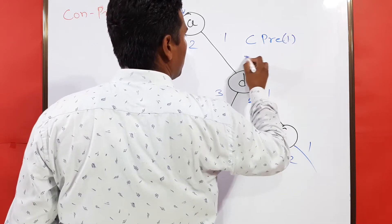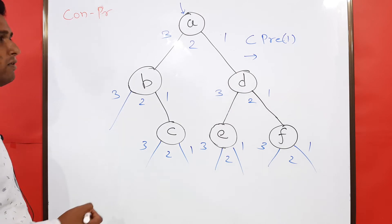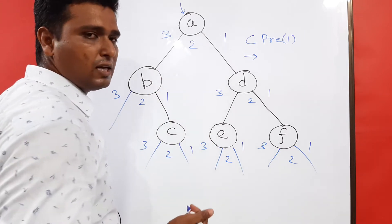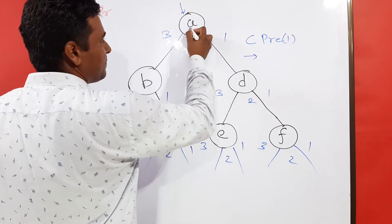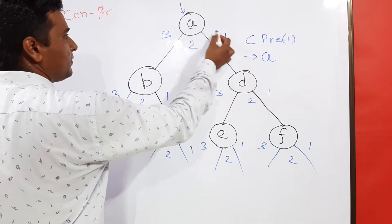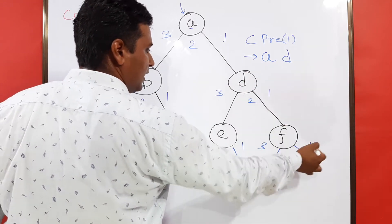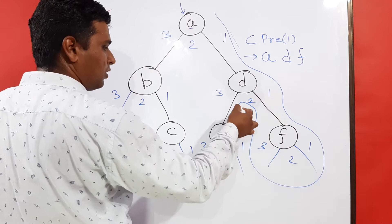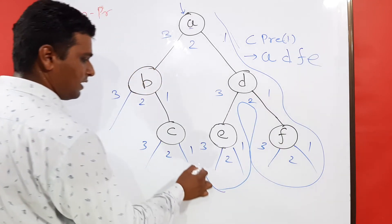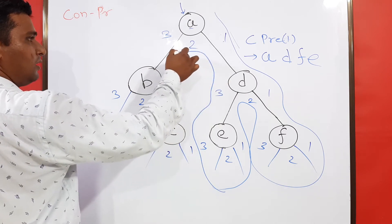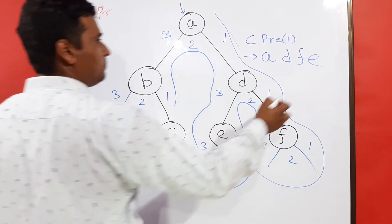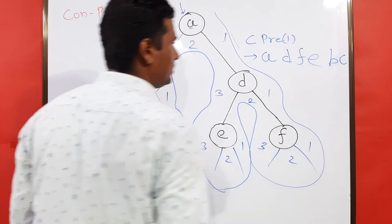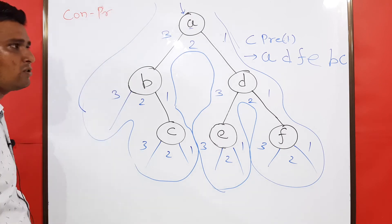I will write the sequence here — that is converse pre, or C-PRE — and we are going to start with one. In pre-order the root node is visited first; same case here in converse also. We start with A, that is one. So I write A, then D because D is having one, then F, then E. Then visiting D's three, we get B, then C because it is having one. In this way you can see that we have visited all the nodes — that is converse pre-order.